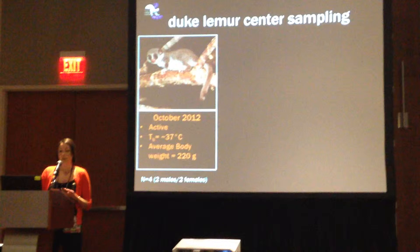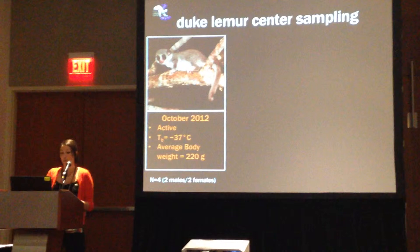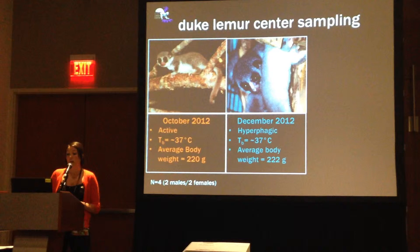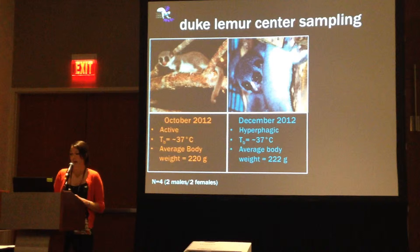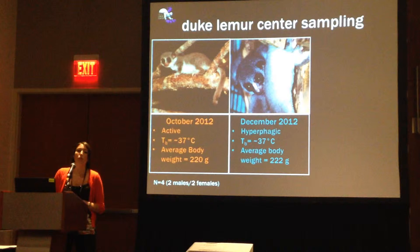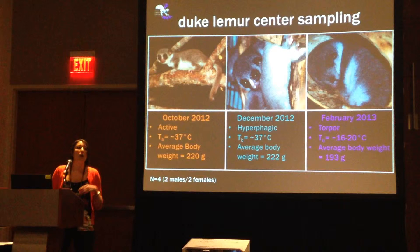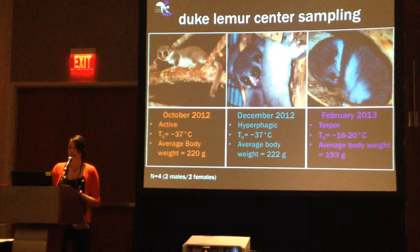In October 2012, I sampled white adipose tissue from animals in their active state — body temperature euthermic at around 37 degrees Celsius, and average body weight of 220 grams. In December 2012, I sampled animals in their hyperphagic state, or intense fattening phase — eating a lot, gaining weight, average body temperature of 37 degrees, and average body weight of 222 grams. In February 2013, I sampled animals during a torpor bout — body temperature between 16 to 20 degrees Celsius, and average body weight of 193 grams.